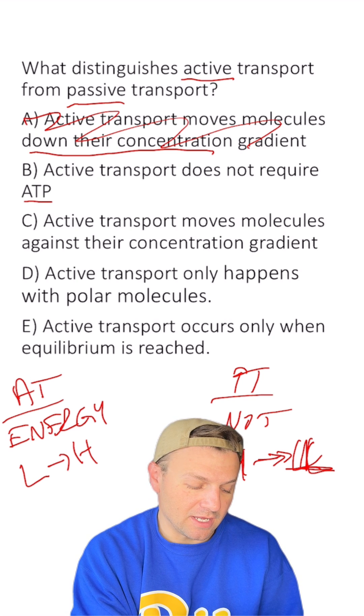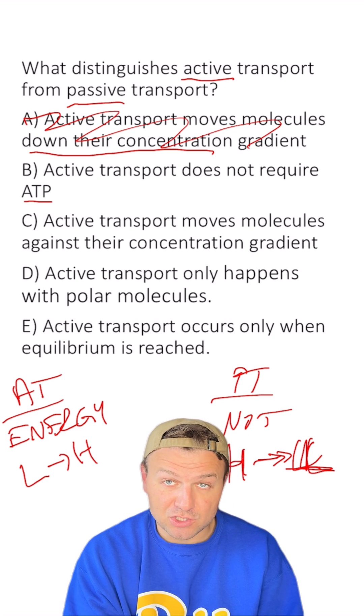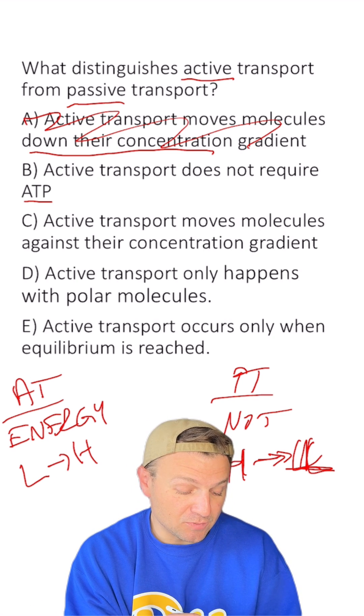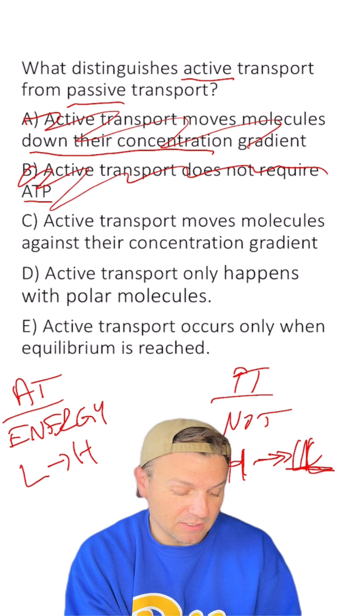B, active transport does not require ATP. ATP is our energy currency. It's what the cell uses for energy. So active transport does require ATP, that means B is wrong.